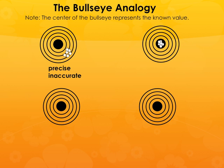Let's go to the next one. You still took your six shots and this time they all landed in the center — and remember the center is the known value. They're clustered together and they're at the center, so you would say this data set is both precise and accurate. The results are clustered closely together and they're in the center, which is the known value.